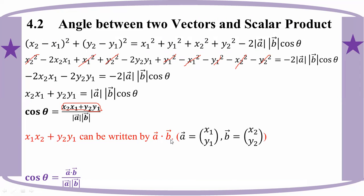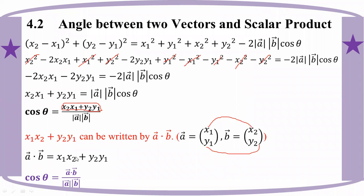Vector A and vector B. The scalar product A dot B equals x1*x2 plus y1*y2. So cos theta equals A into vector B divided by modulus of vector A into modulus of vector B.